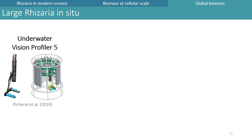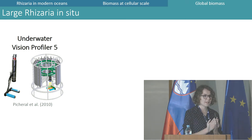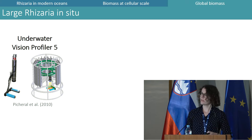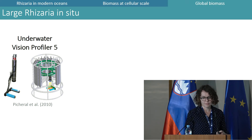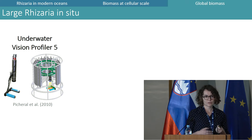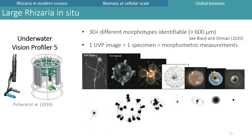Rhizaria are fragile organisms, but we can sample the large ones using in-situ imaging, such as the UVP5 camera, which gets vertical profiles of particle abundance and saves images of large particles over 600 micrometers. We can identify these particles, and for Rhizaria we have more than 30 different morphotypes that we can assign to specific taxa — mostly Phaeodaria with almost no Polycystines. For each specimen we can get a size measurement, allowing us to apply our allometric relationships.